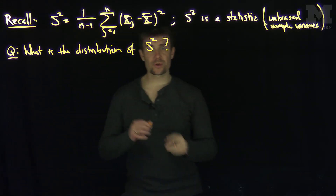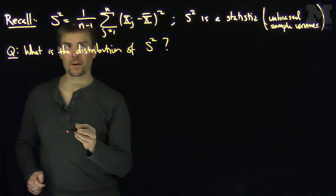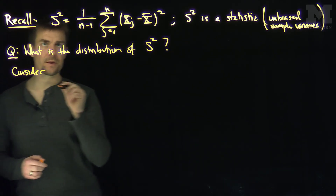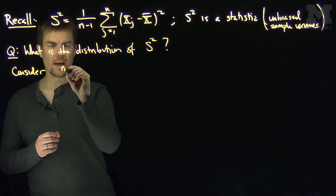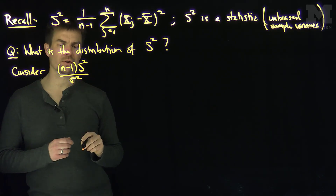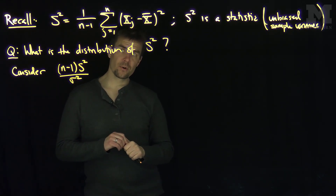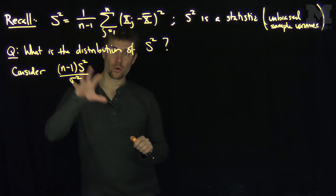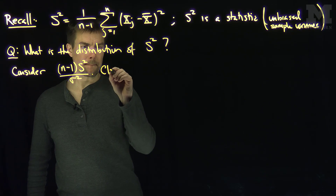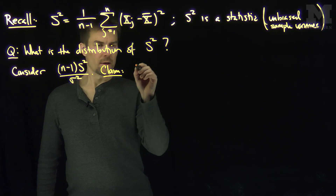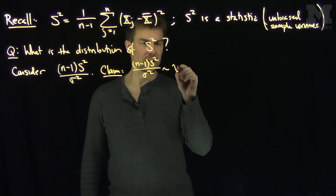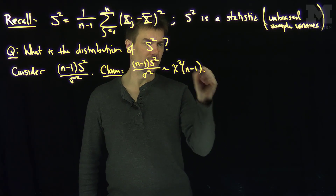We are going to answer this question in a concise way. We will consider the modified quantity n minus 1 times s-squared over the population variance sigma-squared. We are going to show that this quantity has a chi-squared distribution with n minus 1 degrees of freedom. So our claim is: n minus 1 s-squared over sigma-squared is chi-squared with n minus 1 degrees of freedom.